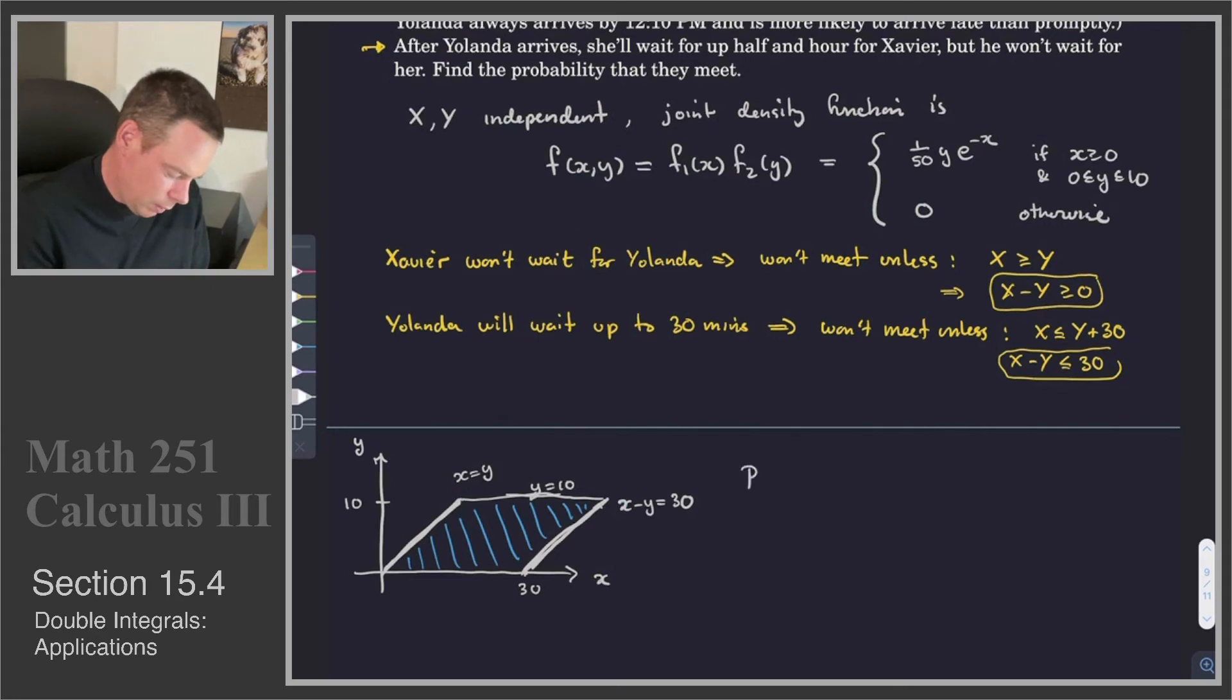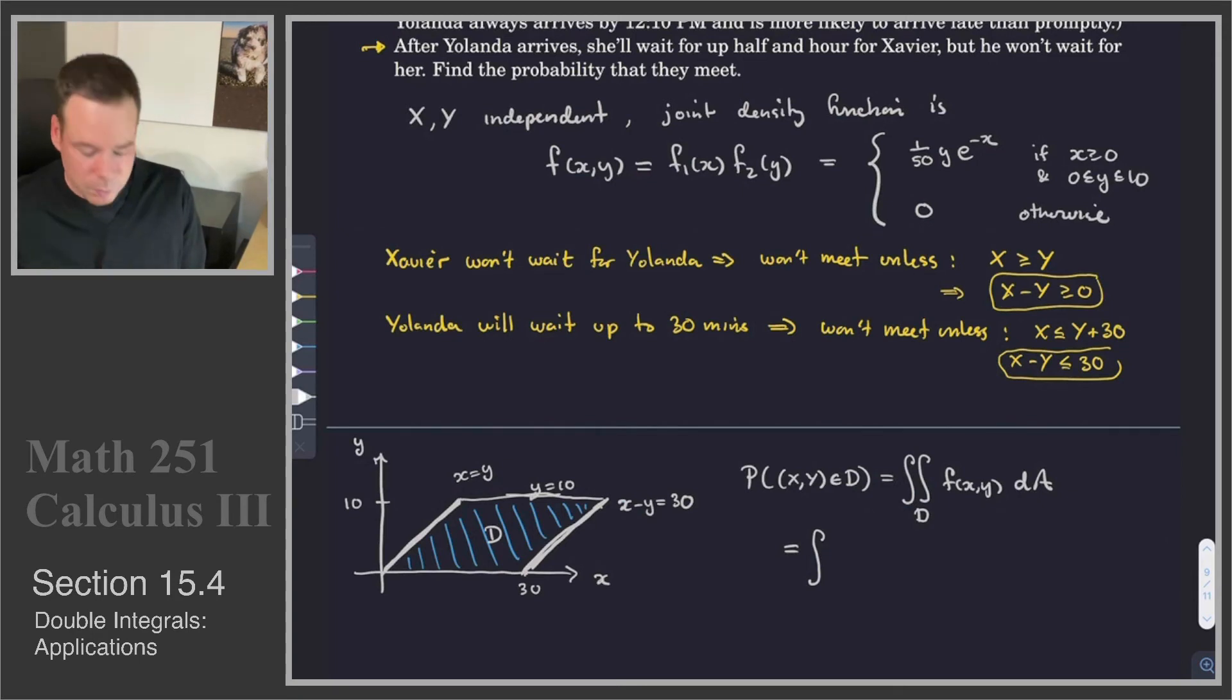So the probability that X, Y is in this domain D, we'll call that D, the probability that they will have a chance of meeting is given by the integral over this domain D of the probability density function F of X, Y dA. And so what is that? That's the integral over. Now we can think about which variable is best to integrate with respect to first, Y or X?